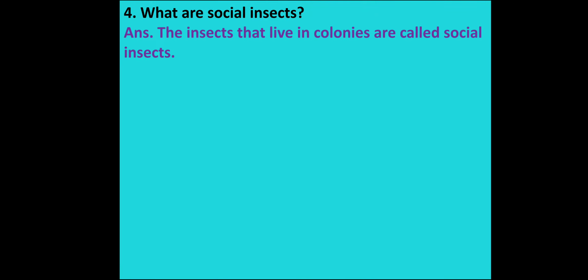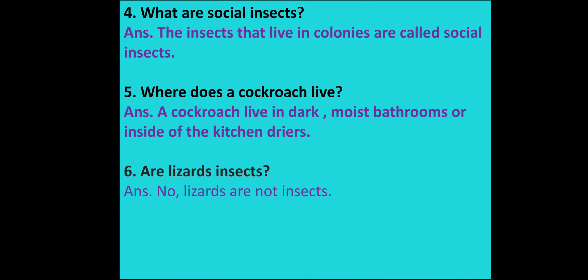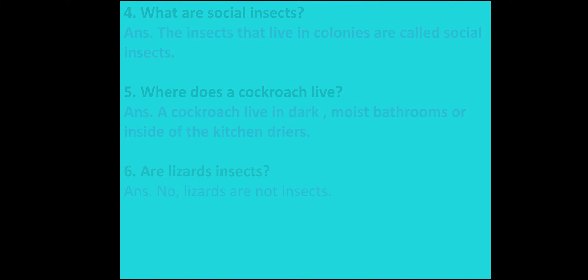Question number 4: What are social insects? Answer: Insects that live in colonies are called social insects. Question number 5: Where does a cockroach live? A cockroach lives in dark, moist bathrooms or inside kitchen drawers. Question number 6: Are lizards insects? No, lizards are not insects. These are the question answers of this unit.